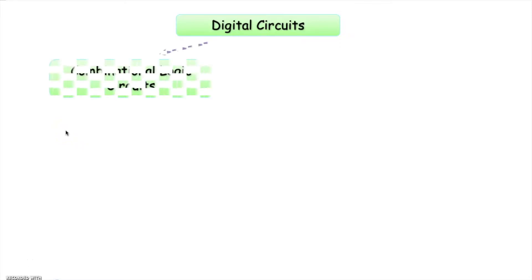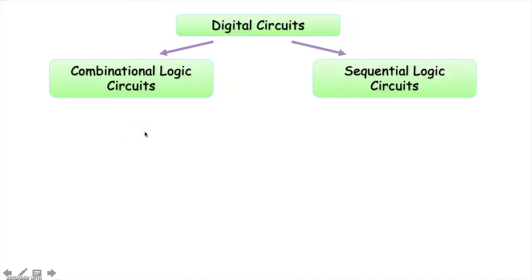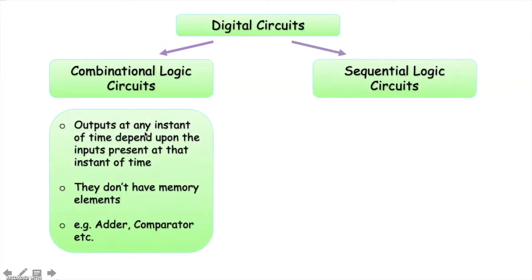Hello viewers. In this video we are going to discuss combinational logic circuits. Digital circuits are divided into two types: combinational logic circuits and sequential logic circuits. In combinational logic circuits, the output at any instant of time depends upon the inputs present at that instant of time. Combinational circuits don't have memory elements.